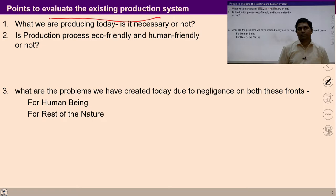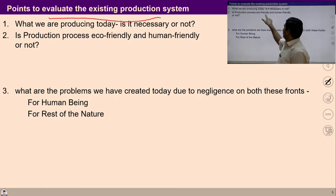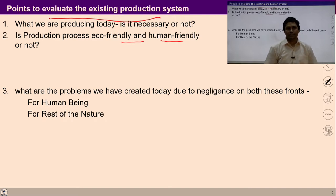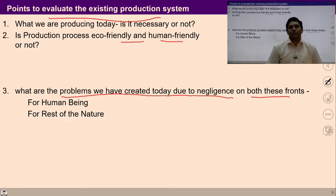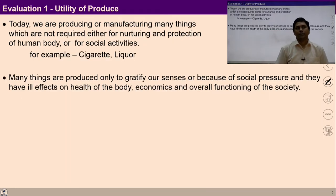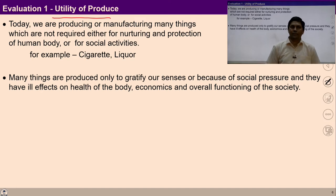We are going to study whether whatever we are producing today is necessary or not, and whether the production processes available are eco-friendly and human-friendly or not. We will also study the problems we have created today due to negligence on both these fronts. These are the points we will cover critically in this session.